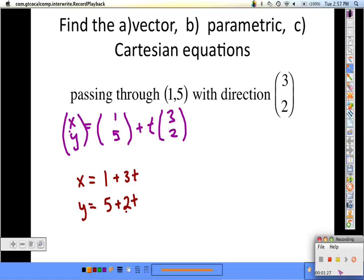To go from parametric form to Cartesian equations, we need to solve these both for t and then equate them. The first equation yields t equals (x minus 1) over 3. The second one gives us t equals (y minus 5) over 2. We set these equal and solve for y.